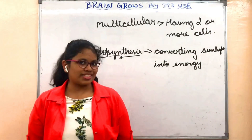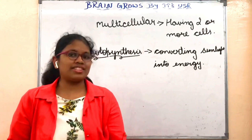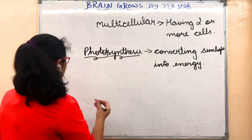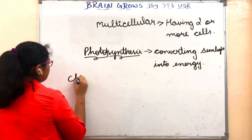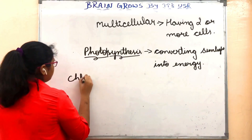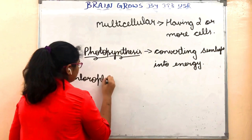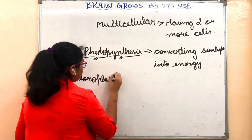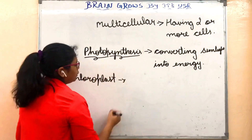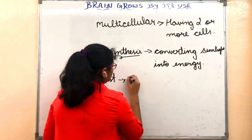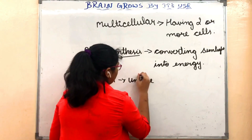Who carries out this photosynthesis? Chloroplasts. The chloroplasts do this photosynthesis. Chloroplasts are unique structures present in the plant cell.